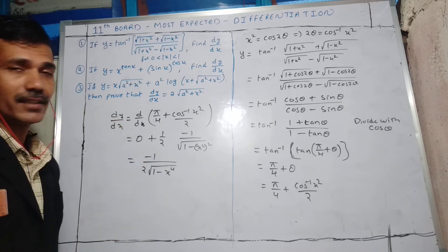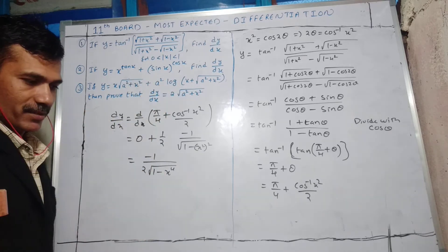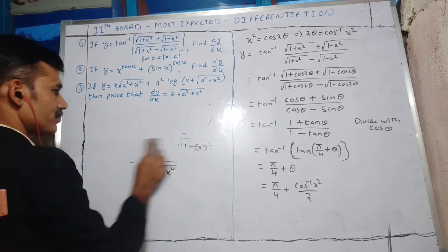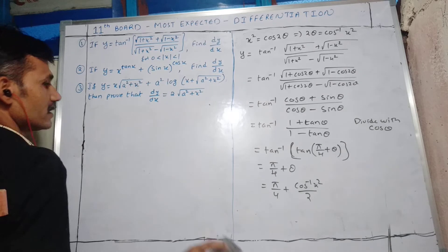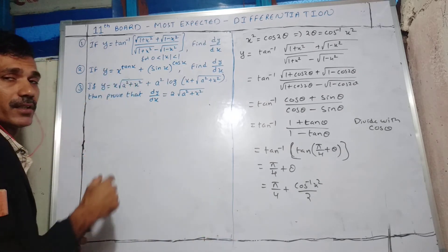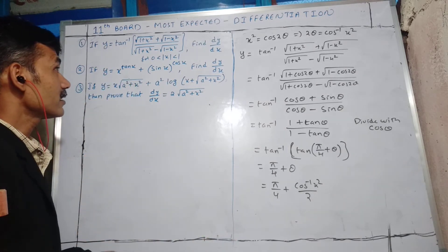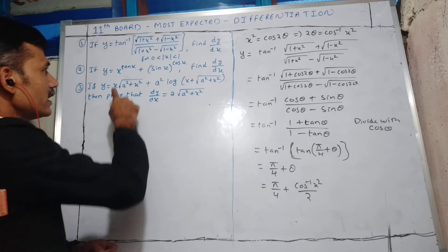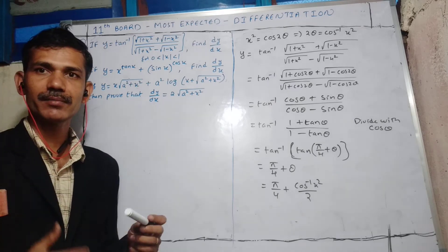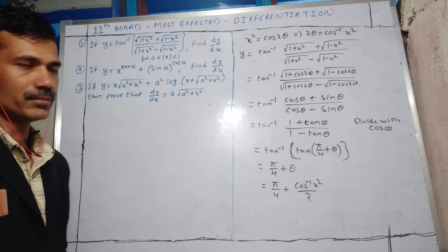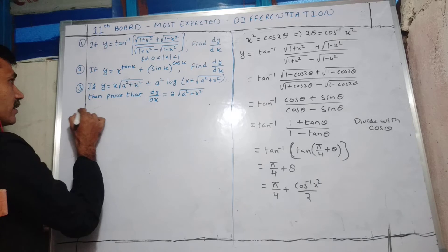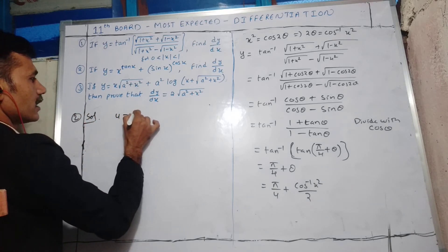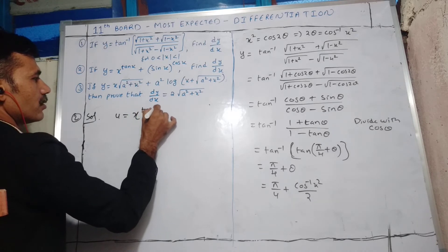Similarly, we can solve another long answer question. Second question: y = x^(tanx) + (sinx)^(cosx). When it is in this form, directly we cannot differentiate, so we use logarithmic differentiation. I will take the first function as u = x^(tanx).